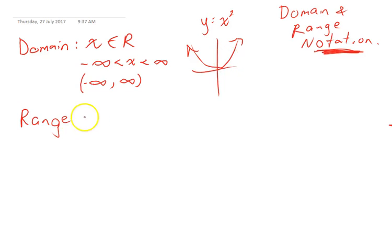So we can say one way to write this would be to say that zero is less than or equal to y, which is less than infinity. Now note, my range is zero is less than or equal to because it's touching the x-axis. That's because if x equals zero, y also equals zero. So the range y can be equal to zero.